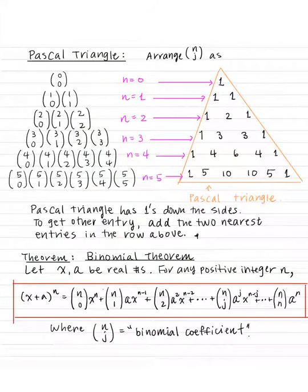Now we're going to talk about Pascal's Triangle. This triangle was invented by the French mathematician Blaise Pascal — that's where the name comes from. However, if I remember correctly, this triangle was already invented by Indians and Chinese about 350 years before Pascal's time, believe it or not.